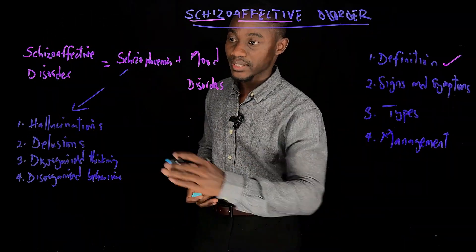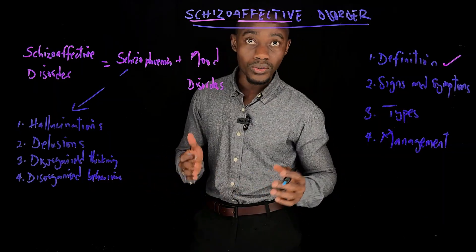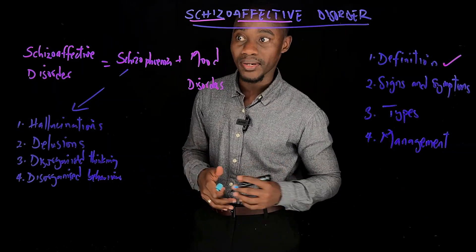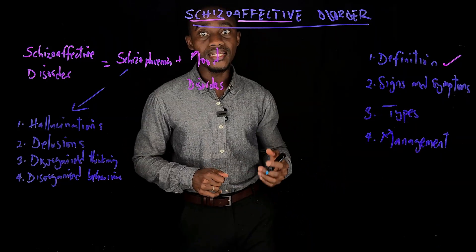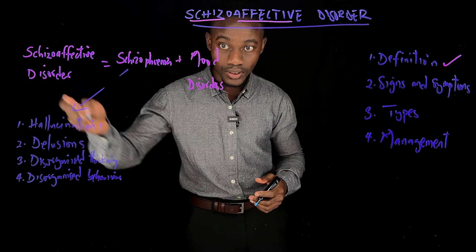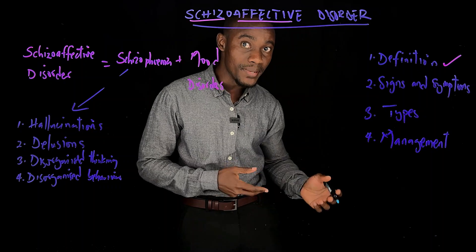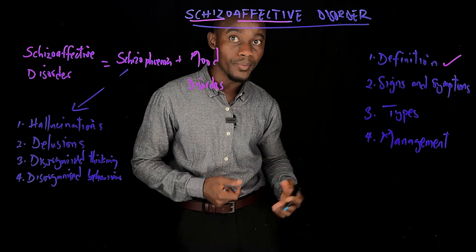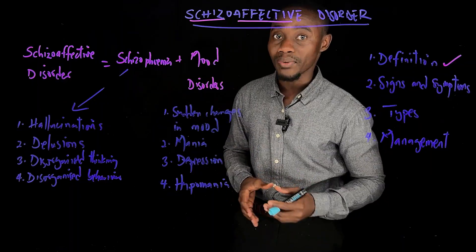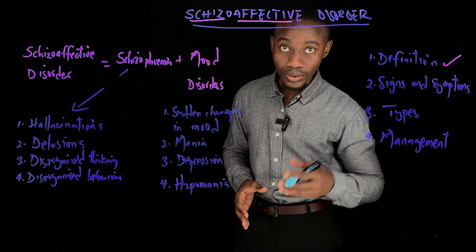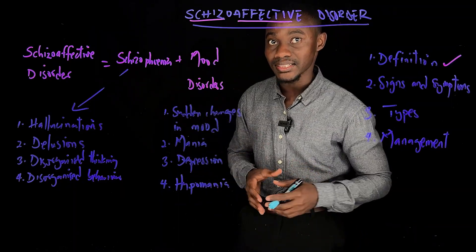I've already explained what hallucinations, delusions, disorganized thinking, and disorganized behavior mean in my video on schizophrenia, so I'm not going to explain them again. In the same way, an individual suffering from schizoaffective disorder would also demonstrate signs and symptoms of mood disorders such as sudden changes in mood, mania, depression, or hypomania — all explained in detail in my video on mood disorders.